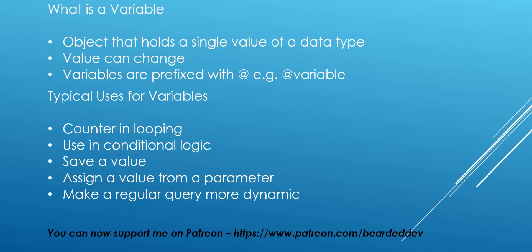What is a variable? It's an object that holds a single value of a certain data type. The value can change, and variables are prefixed with an at symbol. Typical uses for variables are as a counter in looping, and using conditional logic — so if the value of the variable is this, execute this; if not, execute this.